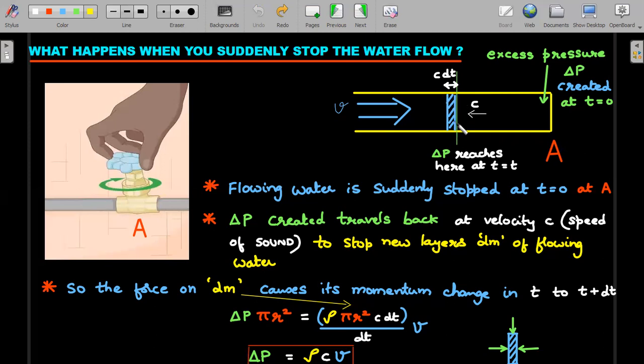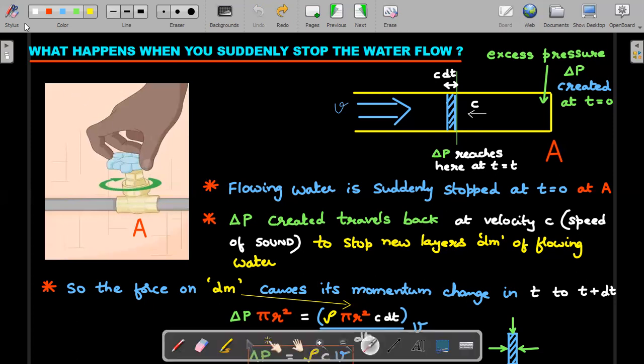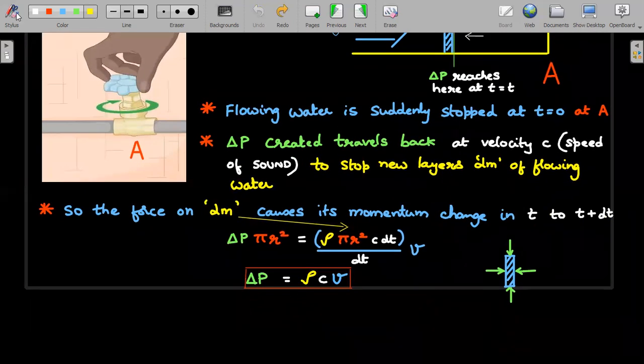What is the value of that force? The value of ΔP multiplied by area of cross section, assume it is πr², should be equal to dm/dt times v. Change in velocity is v itself, so change in momentum is the value of dm × v divided by dt. How do you write this value of dm? This entire bracket represents dm: the density of water multiplied by volume of this element that I have shaded. Volume is area multiplied by the length, which is cdt.